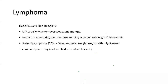For both Hodgkin's and non-Hodgkin's lymphoma, lymphadenopathy is common and develops over weeks to months. Nodes are non-tender and discrete — mobile, large, and rubbery in lymphomas, and soft in leukemias. Systemic symptoms are seen in 30% of patients, including fever, anorexia, weight loss, pruritus, and night sweats. These are more commonly seen in older children.